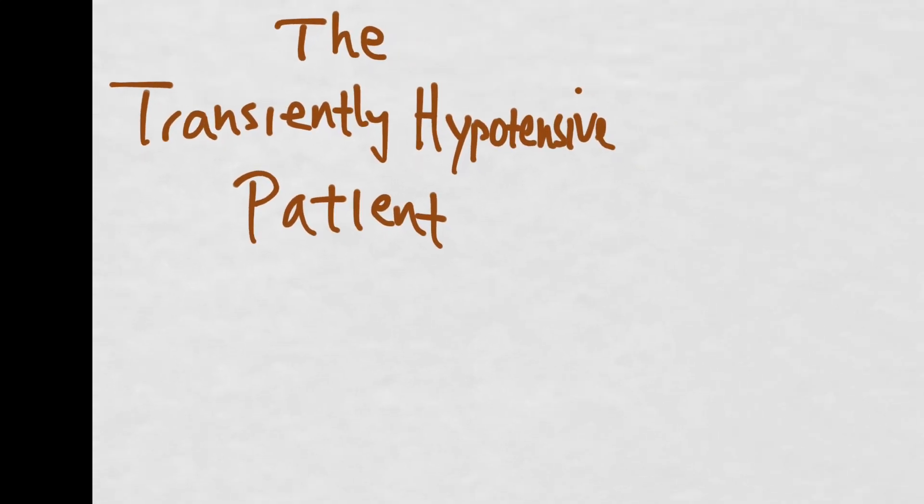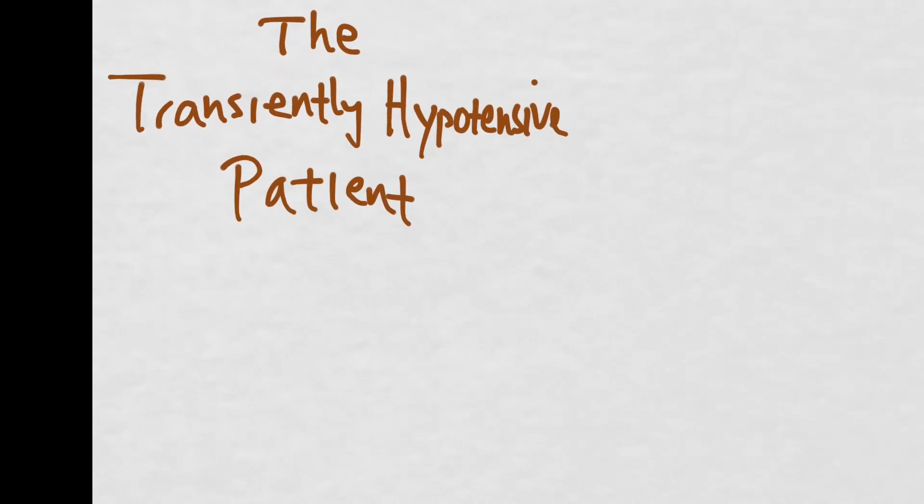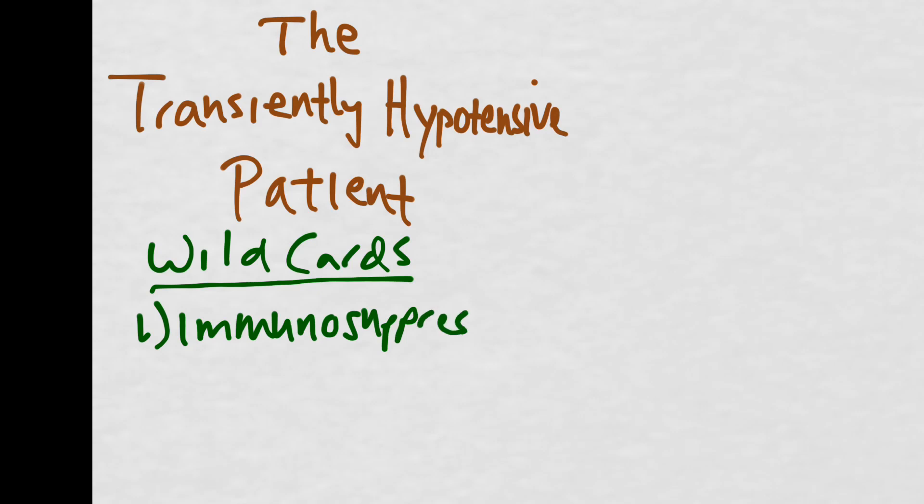So let's go ahead and get started. The first thing you're going to want to do is to check and see if your patient has any wild cards. Is your patient immunosuppressed? If so, they may be hiding an infection and their only manifestation was that transient reading of hypotension.